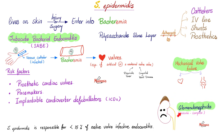Please remember glomerulonephritis, because when we talk about streptococcus later, we'll also discuss it. If you want to learn more about nephritic syndrome, watch my Nephrology and 5-Minute Review playlists. By the way, Staph epidermidis is responsible for less than 15% of native valve infective endocarditis.